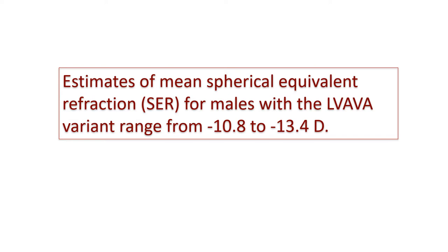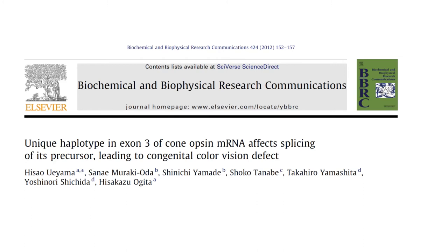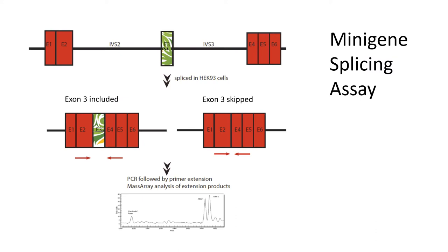The fact that the LVAVA haplotype causes inherited severe high myopia has now been confirmed by multiple labs worldwide, and estimates of the mean spherical equivalent refraction for males with the LVAVA variant range from minus 10.8 to minus 13.4 diopters. The molecular mechanism for how the LVAVA haplotype causes a problem with photoreceptor function was elucidated by Ueyama's group, who demonstrated that the haplotype causes exon 3 skipping.